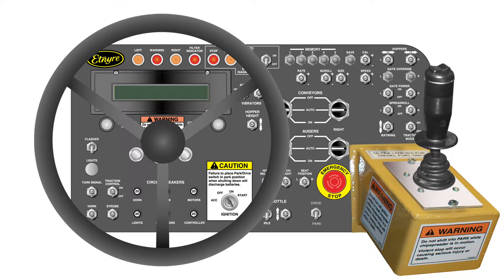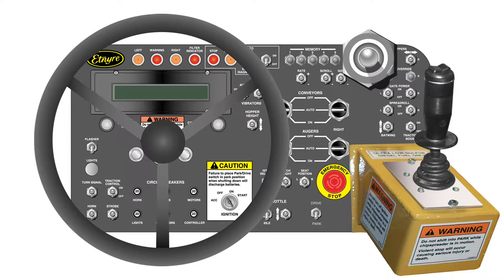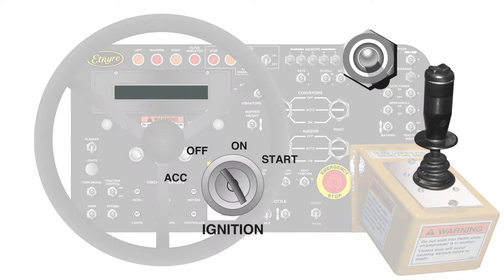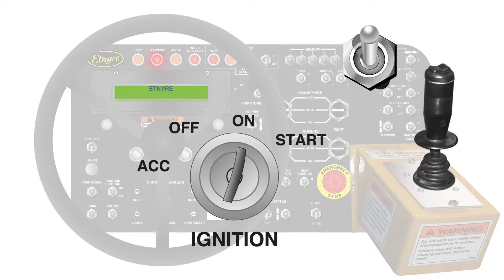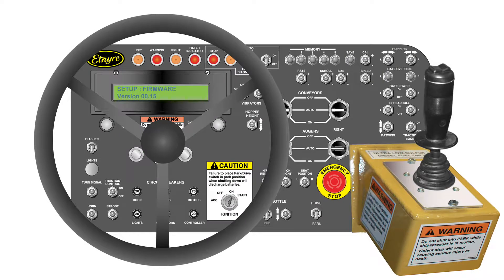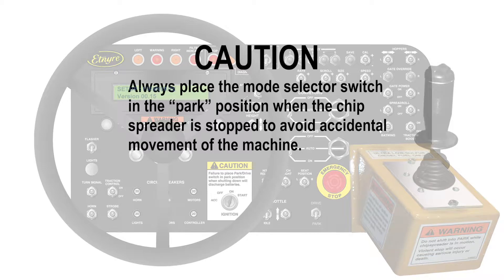The following screens are entered by holding the cal switch either up or down while turning the ignition key on or resetting the computer. The setup of the computer should always be performed with the ignition key on but the engine not running, except for calibrating the gates and the speed. Always place the mode selector switch in the park position when the chip spreader is stopped to avoid accidental movement of the machine.